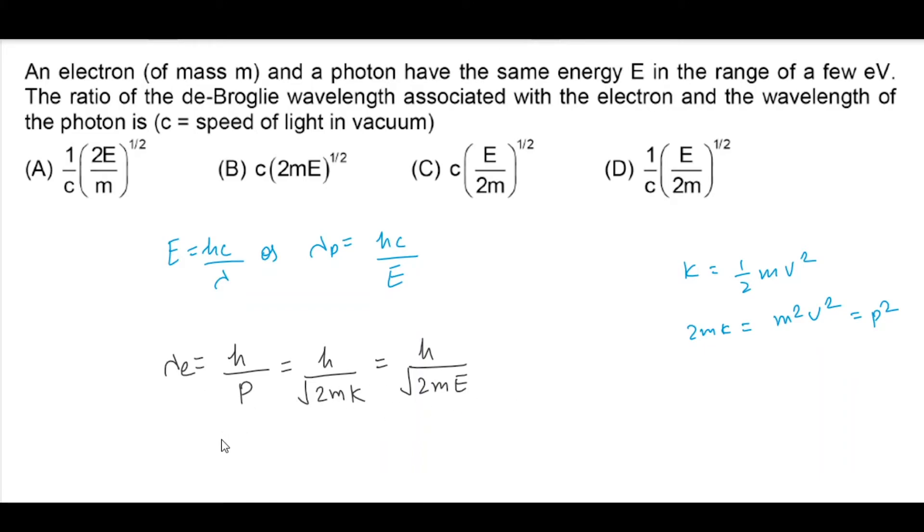So lambda e divided by lambda p will be H divided by root 2m into E, divided by HC divided by E. H cancels with H. If we simplify this we'll get root over E divided by C times twice of root M. So it looks like D is the correct answer.